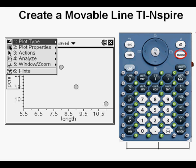We're going to add a movable line. We start by pressing the menu key at the upper right of the keypad. We see the five options: plot type, plot properties, actions, analyze, and window/zoom.